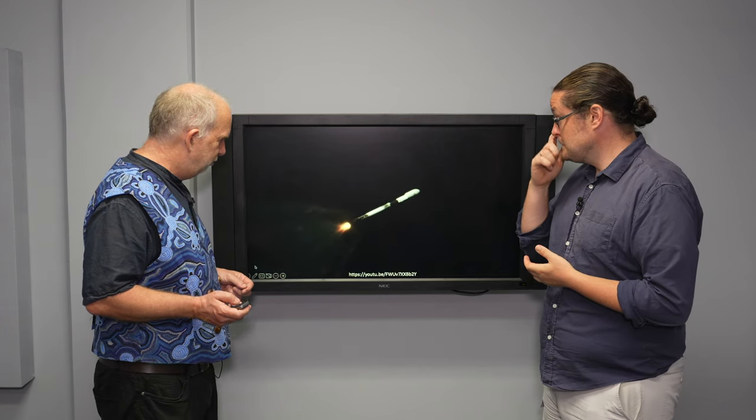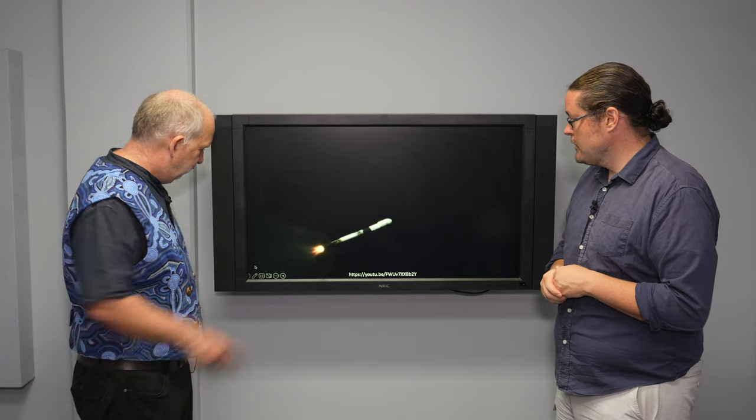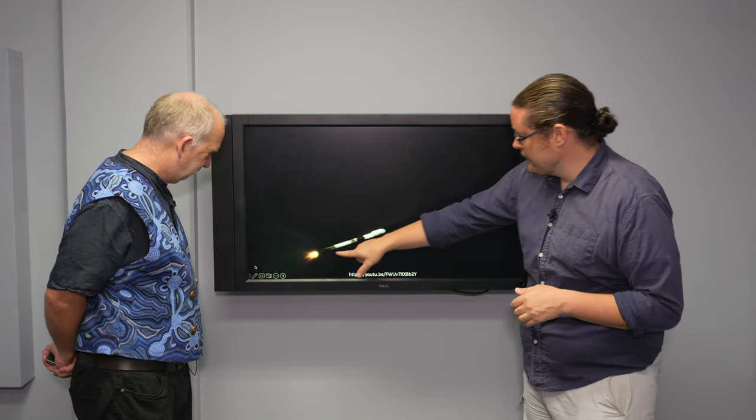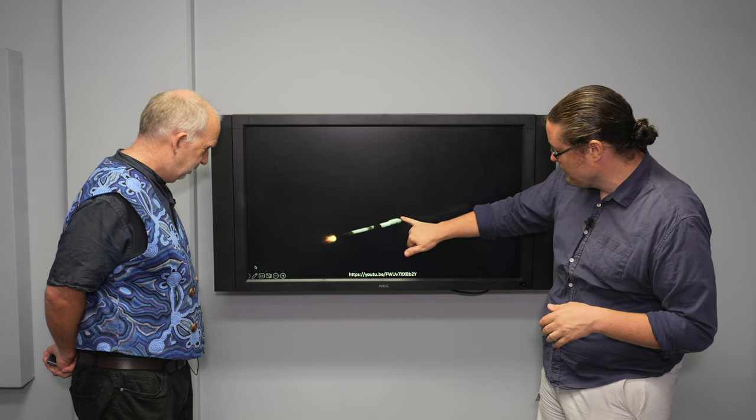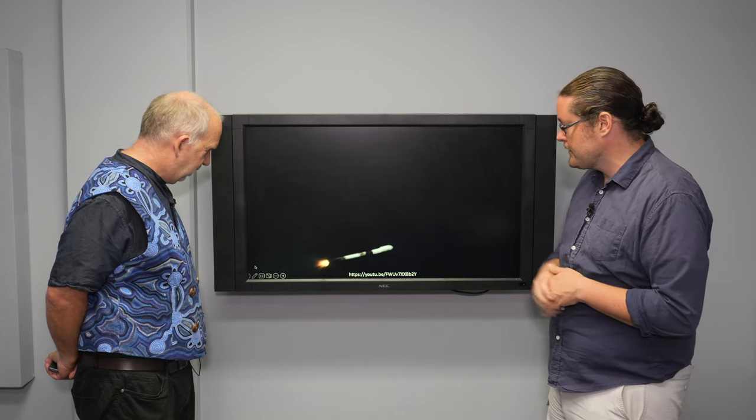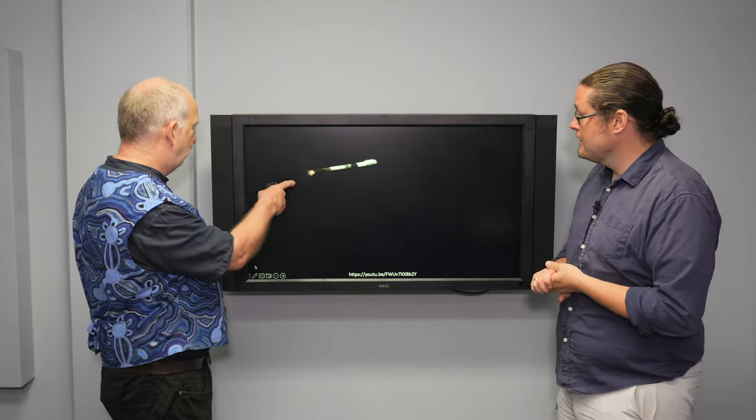Here's actually a movie of SpaceX Falcon 9 watching the stage separation. So at the moment, it's the bottom stage that's firing here. And so this is the rocket. That little bit is the payload at the top. So that's the thing we're trying to get into space. And they're tracking this with the ground-based camera, which is actually a pretty good job. Okay. And now it's running out of fuel.